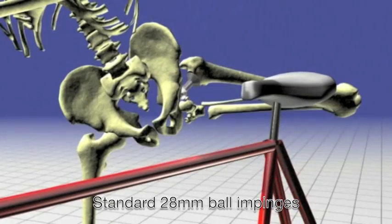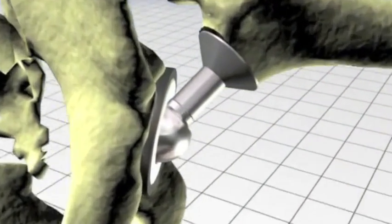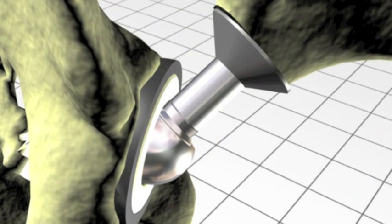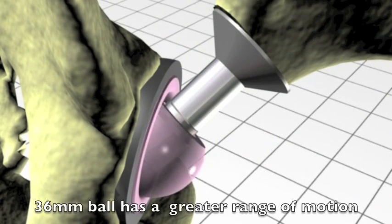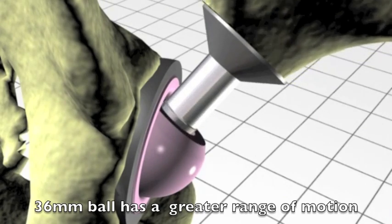In practice, this means that where the smaller 28mm ball would impinge, if we choose a 36mm bearing, we have a greater range of motion.